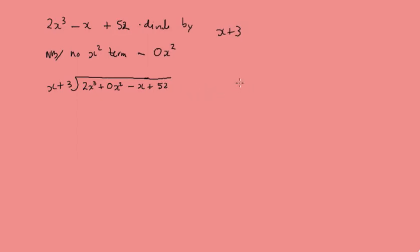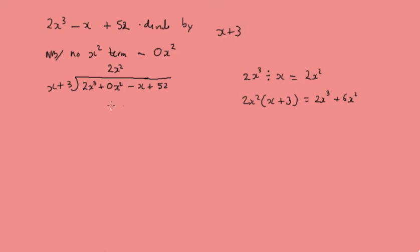Again, we take the first term: 2x³ divided by x gives us 2x². We put 2x² in the quotient. Then we take 2x² and multiply it by x plus 3, giving us 2x³ plus 6x². We write that below and subtract, so the 2x³ cancels and we get minus 6x².